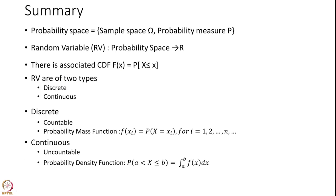With this, we summarize what we have covered today. We introduced the probability space, which is a sample space with a probability measure. On the probability space we defined a random variable, which is a mapping from the probability space to a real line. There are two types of random variables we encounter in real life: discrete and continuous.